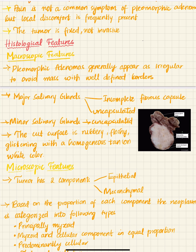The histological features are divided into macroscopic and microscopic features. Macroscopically, pleomorphic adenoma appears as an irregular to ovoid mass with well-defined borders. In major salivary glands, an incomplete fibrous capsule is present around the tumor, while in minor salivary glands the tumor is generally encapsulated. The cut surface is rubbery, fleshy, and glistening with a homogeneous tan or white color.